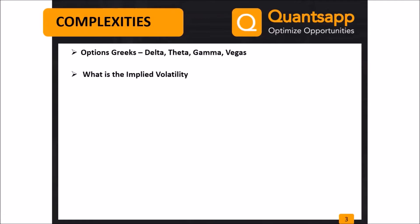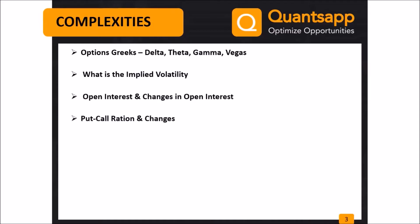Firstly, option Greeks. Option Greeks are like Greek to majority of people — they fail to understand them completely. Greeks such as delta, theta, gamma, and vega play a very important role in option trading. It is also important to understand implied volatility, open interest, changes in open interest, and how to account for put-call ratio and understand its changes.